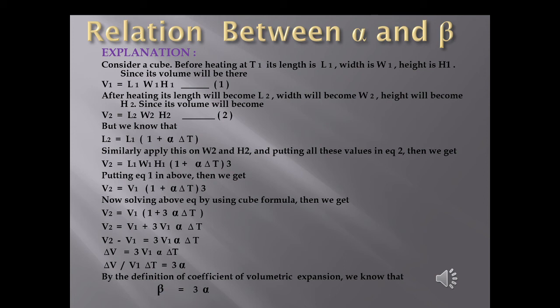We have (1 + α·ΔT)³, which is of the form (A + B)³ = A³ + 3A²B + 3AB² + B³. Applying this and neglecting higher order terms — because α is very small, higher powers are negligible — we keep only the power-1 term. So our equation simplifies to V2 = V1(1 + 3α·ΔT).